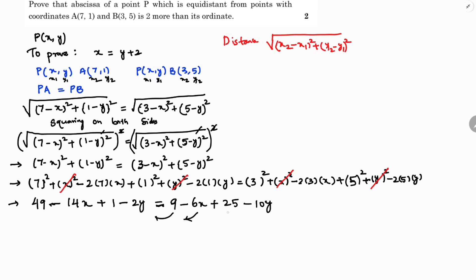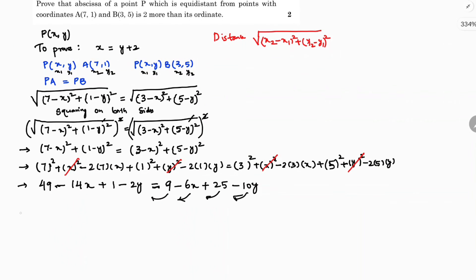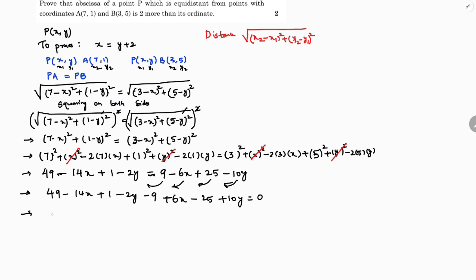I will take all terms to the LHS. So: 49 minus 14x plus 1 minus 2y minus 9 plus 6x minus 25 minus 10y equals 0. Combining like terms: minus 14x plus 6x gives minus 8x; minus 2y minus 10y gives minus 12y — wait, collecting constants: 49 plus 1 is 50, minus 25 is 25, minus 9 is 16. So we get minus 8x plus 8y plus 16 equals 0.